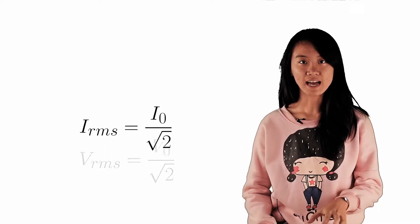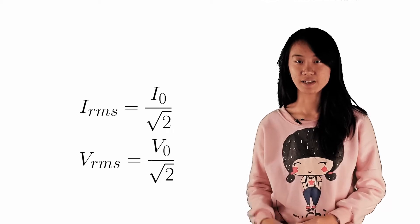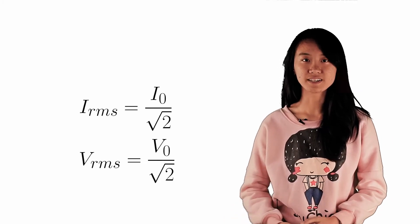You learn that RMSi equals I0 over square root 2, and RMSv equals V0 over square root 2.